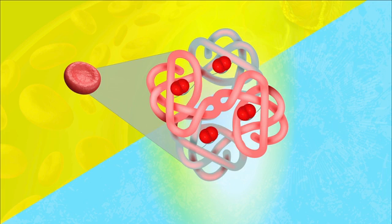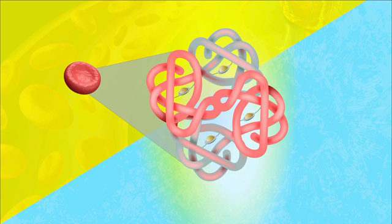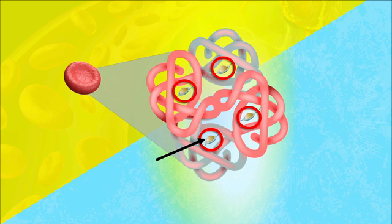So if you want to produce red blood cells, you need hemoglobin. And to produce hemoglobin, we need the four heme groups. And to produce the four heme groups, we need iron. This entire process relies heavily on the availability of iron. If there's not enough iron available, we've got problems.